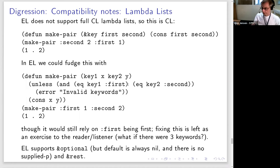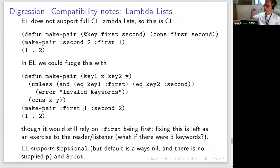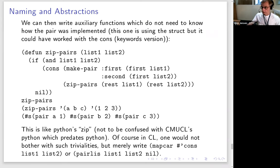Lambda list features are extremely useful. `&optional` is supported in Emacs Lisp, but you can't give optional parameters a non-nil default value — the default is always nil. In Common Lisp, you can also have a 'supplied-p' parameter to distinguish whether an optional argument was actually supplied or just defaulted. This doesn't work in Emacs Lisp, unfortunately, requiring workarounds.